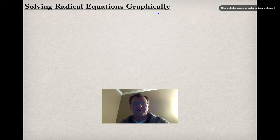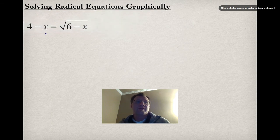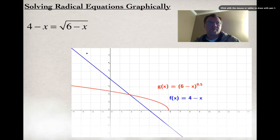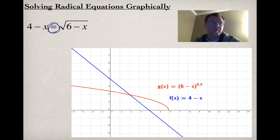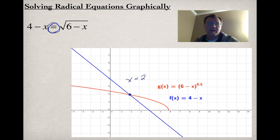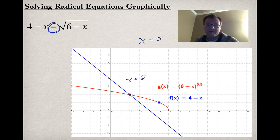We can also solve radical equations graphically — we just need to be able to graph them using a graphing calculator or graphing software like GeoGebra. I've graphed 4 − x in blue (a straight line) and √(6 − x) in red. Because this is an equation, we're looking for where the two graphs intersect, and that is clearly at x = 2. We already solved this algebraically and got x = 2. For x = 5, the red graph and blue graph are clearly not intersecting — that's another reason why that answer was discarded.